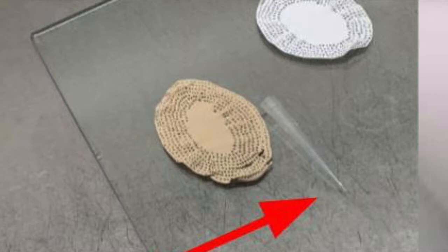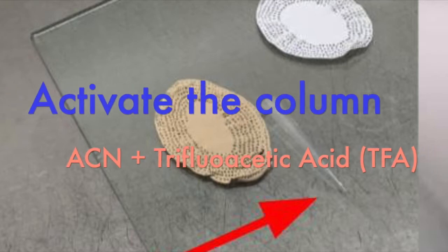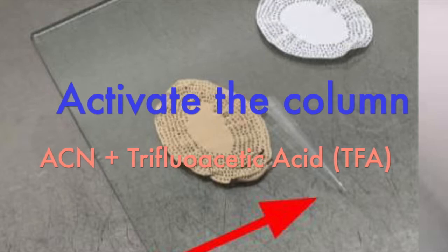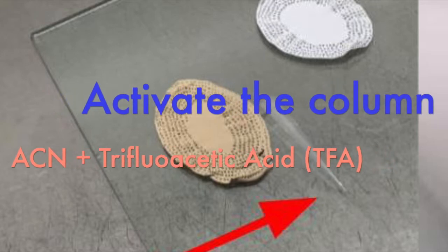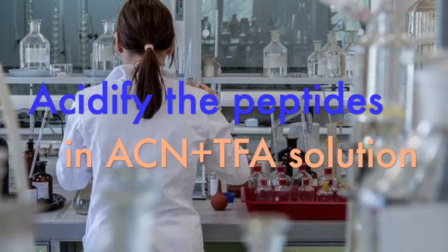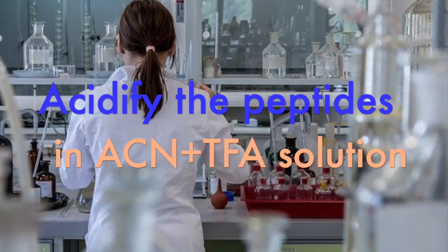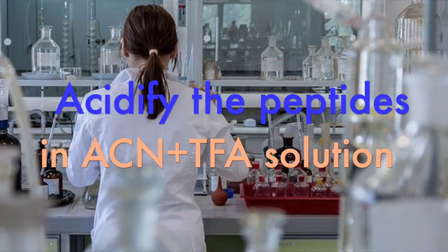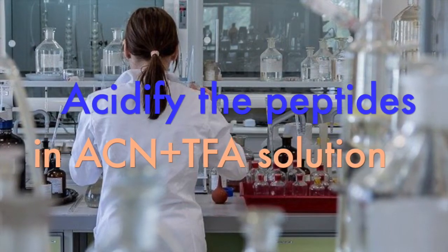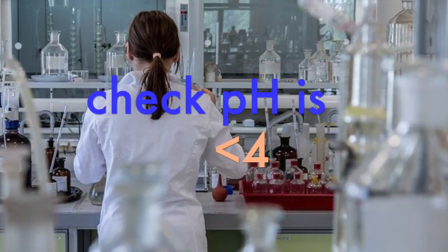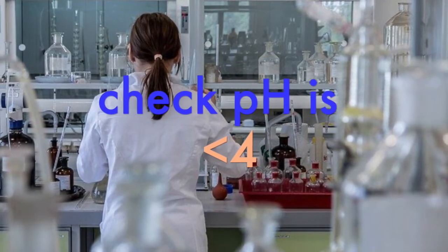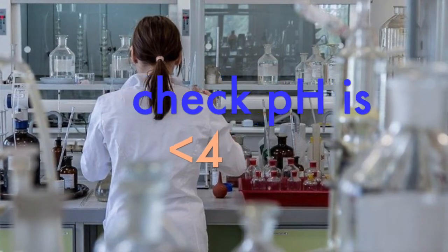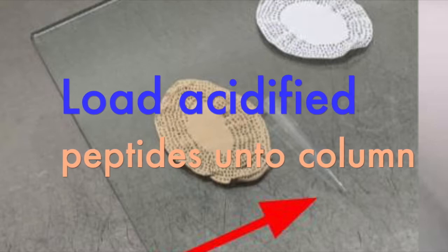Now acidify your samples by adding 5% ACN in 0.5% TFA and 50 microliters of a 10% TFA solution to a pH of less than 4. Test it with a pH strip. Acidified samples can now go onto the activated C18 cation exchange column that you've created in a 200 microliter pipette tip or a commercial one that you've purchased.